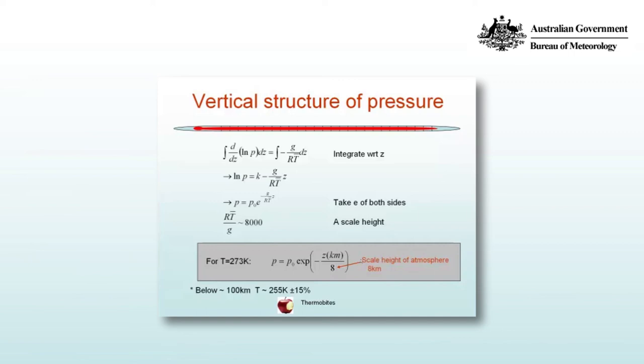We can then work out what's known as a scale height which gives us a measure of the depth of the atmosphere. RT bar over g for t of about 273 is equal to 8000 which is 8 kilometers. So for t equals 273 Kelvin we can write our equation as p equals p0 times the exponential of minus z in kilometers divided by 8, which is our scale height.